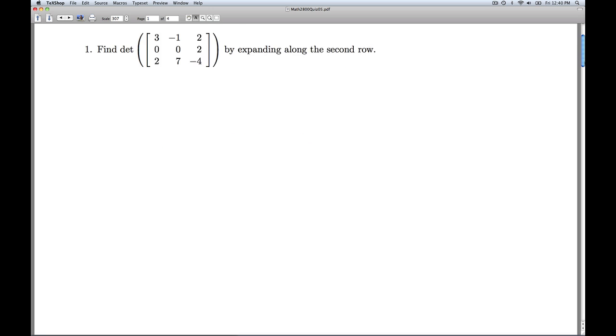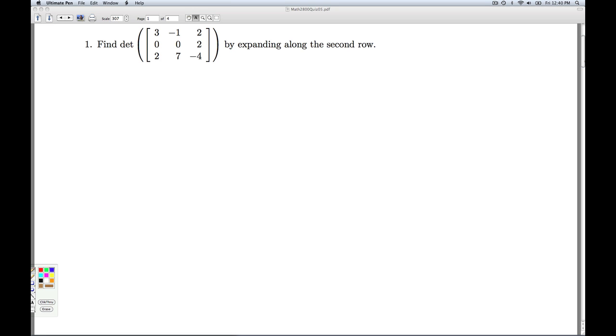Hi folks, this is Linear Algebra Checkpoint Quiz 5. Number 1, we're asked to find the determinant of this matrix by expanding along the second row.